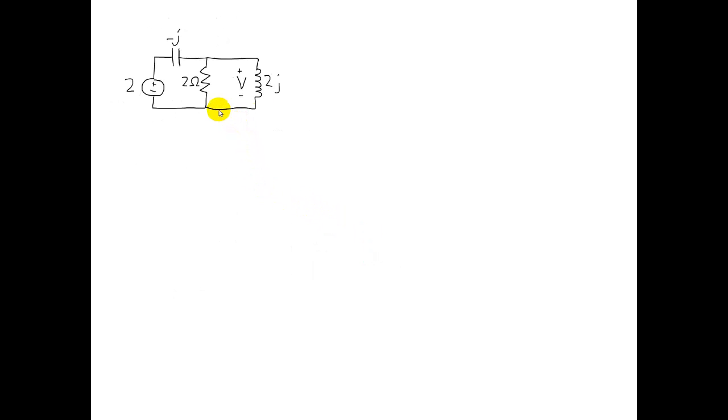Next, we can notice that the voltage we're trying to find across the inductor is also the same as the voltage across the resistor, because both elements are in parallel. So to simplify analysis of the circuit, we can combine these two elements into their equivalent parallel impedance. The equivalent impedance is shown here.